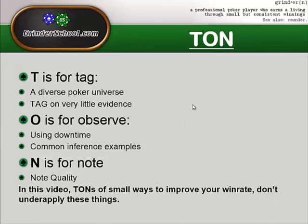In some cases you can identify a player type from the very first hand they sit down. This has a lot of bonuses: it can allow you to table-select better in the lobby, and it gives you a better understanding of what's going on. When you tag players like this you put them into boxes for general decision-making. When you've got those general boxes in your head and practice this a lot, it helps you have an easier time working out how to play against those player types. O stands for Observe.